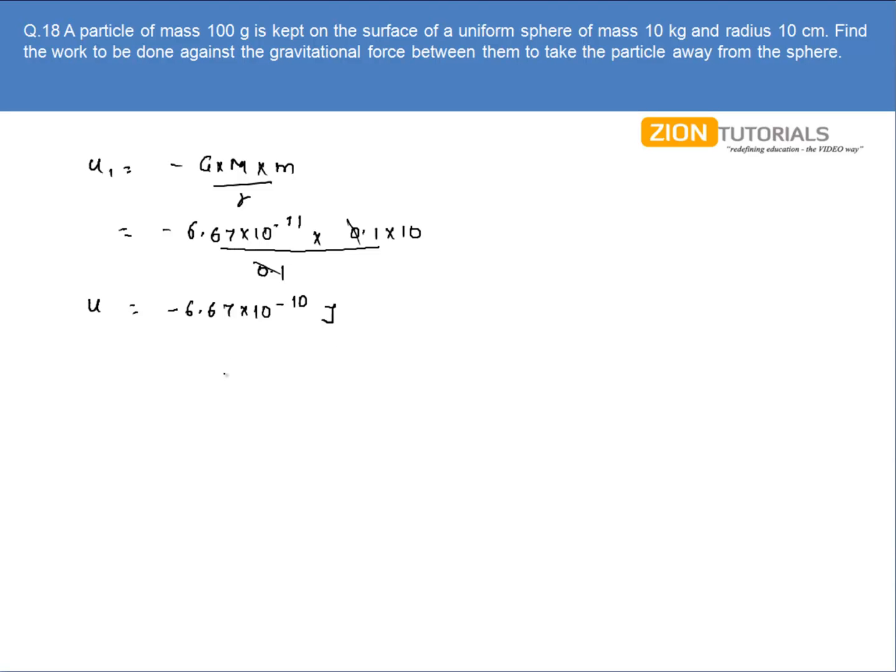Now as I told you, if the same amount of work is done on the particle, then the net potential energy will be zero and it is free from the sphere. So the value of work done is the same, that is 6.67 into 10 to the power minus 10. That is the answer.